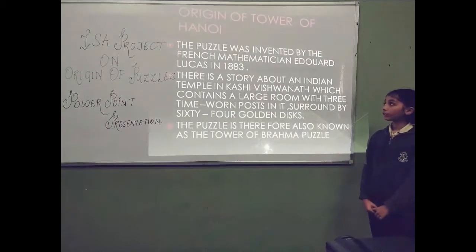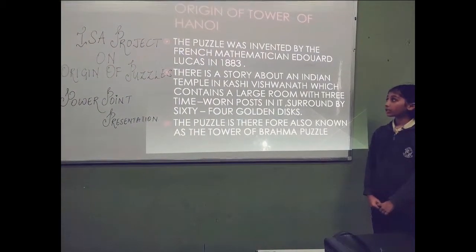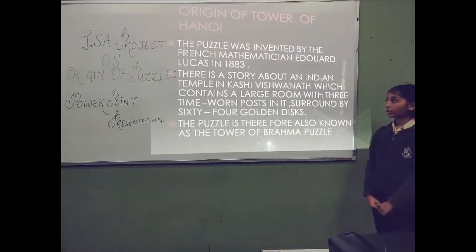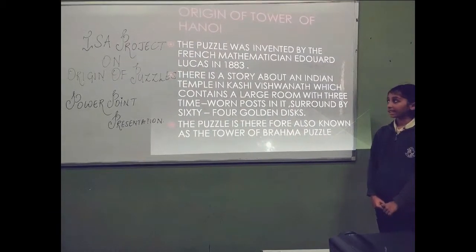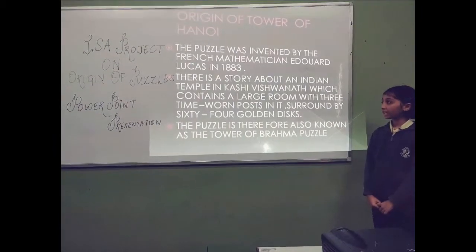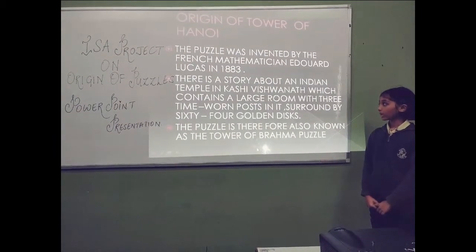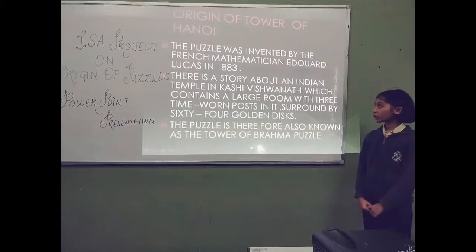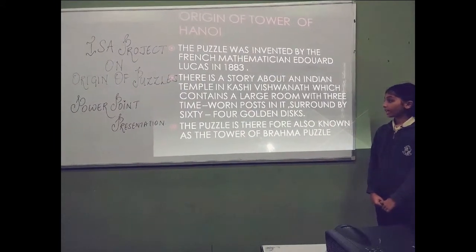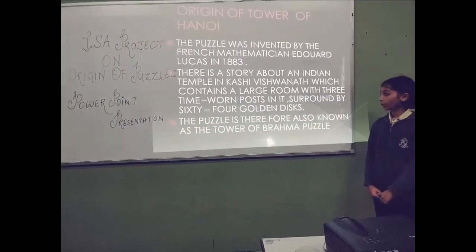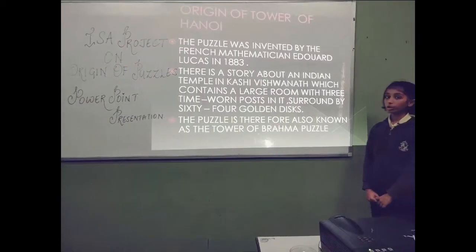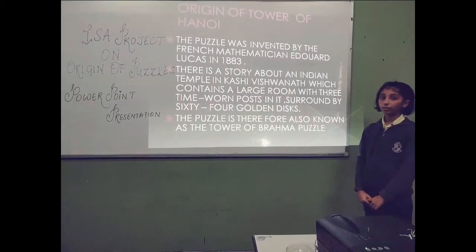The puzzle was invented by the French mathematician Édouard Lucas in 1883. There is a story about an Indian temple, Kashi Vishwan, which contains a large room with three tank-borne posts in it, surrounded by 64 golden discs. The puzzle is therefore also known as Tower of Hanoi.